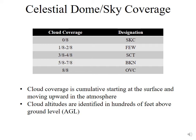If three-eighths to four-eighths of the sky is covered by clouds, we refer to that as scattered. If five-eighths to seven-eighths of the sky is covered, we refer to that as broken, BKN. And if all of the sky is covered, that's overcast, OVC — eight out of eight quadrants.